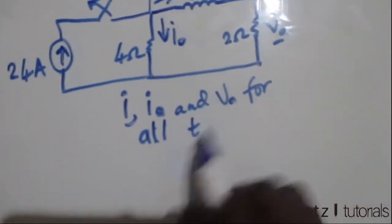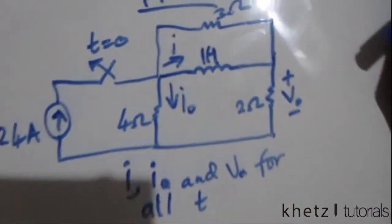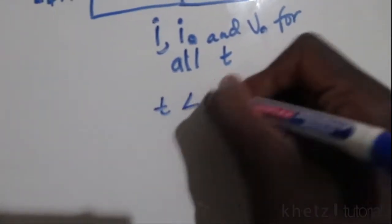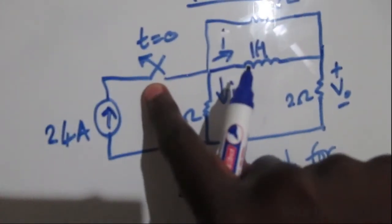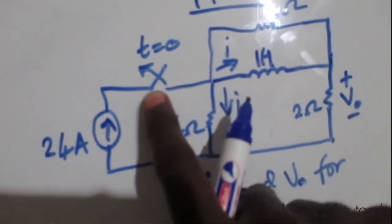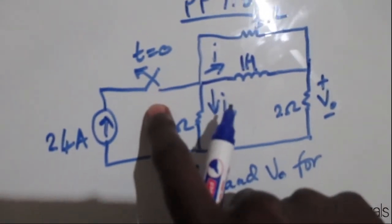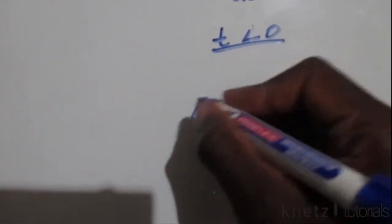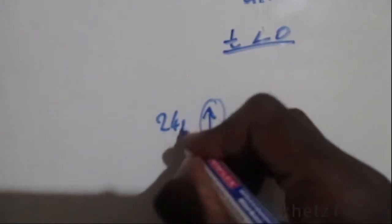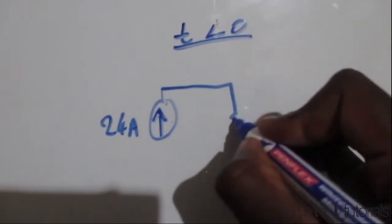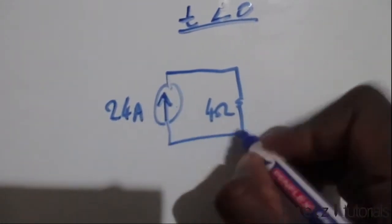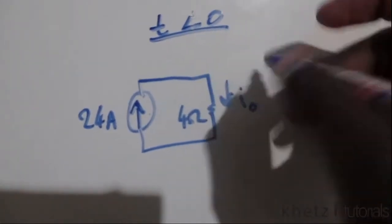We need to find the values for all time, so let's start with t less than zero. Given this circuit, the switching action takes place at t equals zero, which means we open the switch at t equals zero. Otherwise it's closed, so at time less than zero this part is closed and we have the effect of the current source in play. We have the four ohm resistor and i_o indicated there.